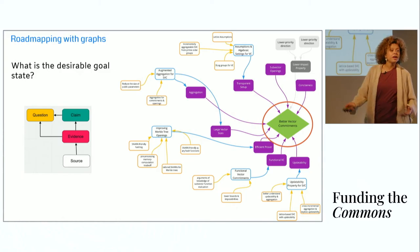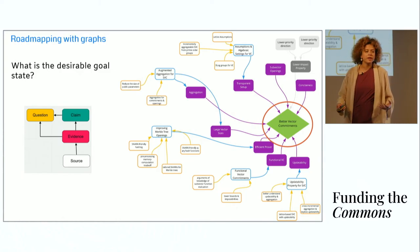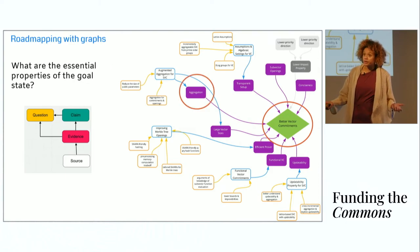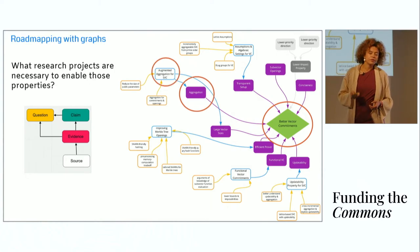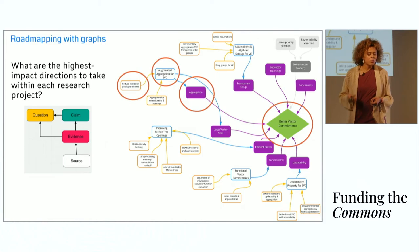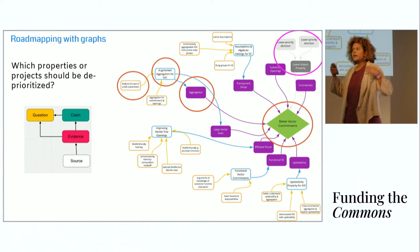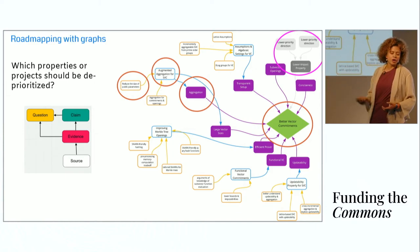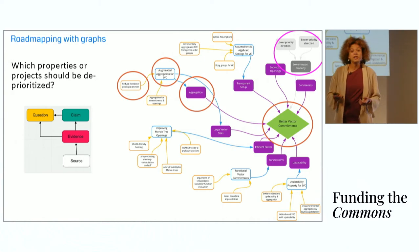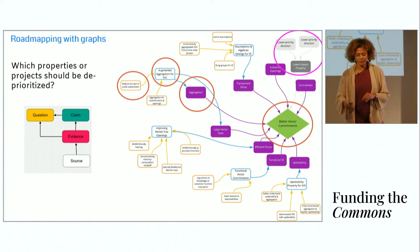For instance, what is the desirable goal state? This represents an argument or a conversation that you may have internally as you're building out your roadmap. What are the essential properties of the goal state? Another argument. What research projects are necessary to enable those properties? And what are the highest impact directions to take within each research project? These are opinionated roadmaps. They express your beliefs about the path to progress here, and so they should be supported with some evidence. And then finally, these are all synthesized into a roadmap. And you make the crucial distinction of which properties or projects should be deprioritized. And I'll get into, in just one minute, how we want to do that with discourse graphs.